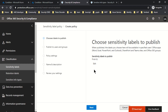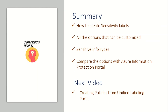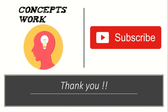To summarize, we've discussed how to create sensitivity labels, what options can be customized, what sensitive info types are, and how to compare both portals. In the next video we'll talk about creating policies for unified labeling. If you learned something new please feel free to subscribe — thank you so much for your time.